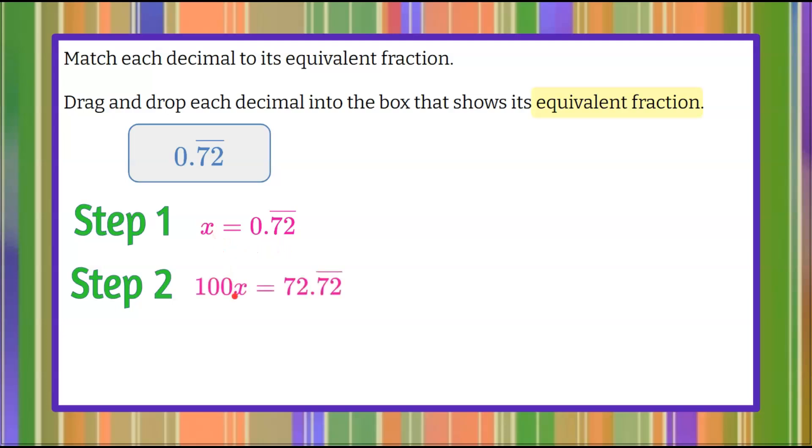So 100 times x is 100x. Then 100 times 0.72 repeating means I'm moving my decimal point two spaces to the right. When I do that, I get 72.72 repeating on and on: 72, 72, 72.